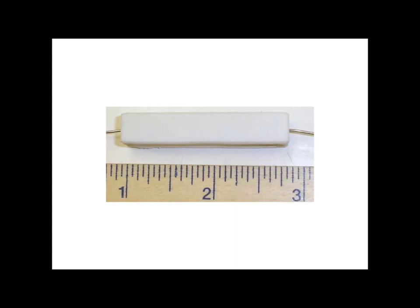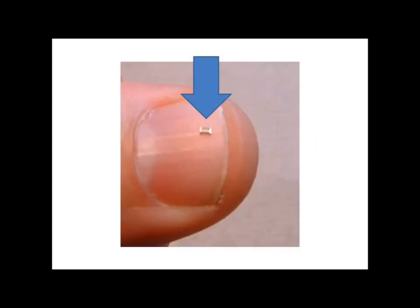At the opposite end of the spectrum, here's a surface-mount resistor. These are used because they take up less room by sitting on the surface of a circuit board. They can get really small.